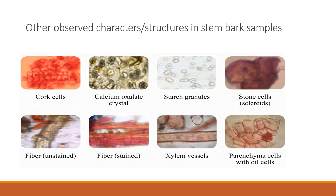Other diagnostic characters of stem bark samples include cork cells, starch granules, xylem vessels, and parenchyma cells with or without oil cells. Some stem bark samples can also have lignin present in the sclerid and fiber cells, which can be detected by the formation of a pink or red coloration of the fibers with the addition of fluoroglucinol and hydrochloric acid. The sclerids can also be colored red upon addition of this reagent for some stem bark samples.